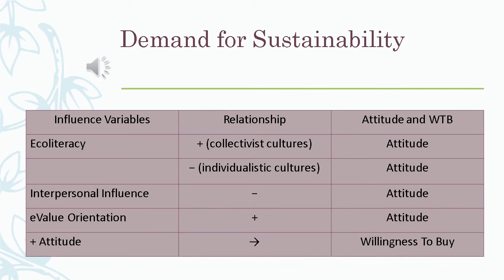Let us see here a comparison of the relationship between influence variables and attitude and willingness to buy. In eco-literacy and attitude, there is a positive relationship, which is called collectivist culture; if it's a negative relationship it's called individualistic culture. Under interpersonal influence and its relationship with attitude, there is a negative relationship, followed by value orientation which shows a positive relationship. So attitude can be related to the willingness to buy.